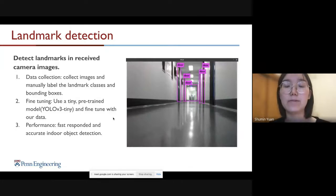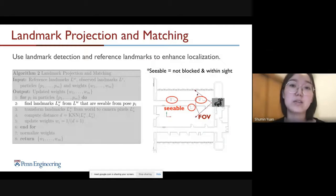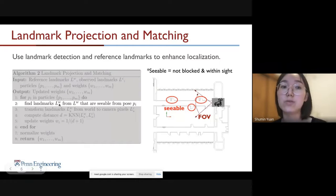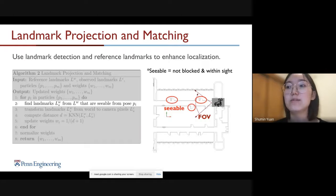I've developed an algorithm to use this detected landmark to enhance the localization. It's called the landmark projection and matching algorithm. The algorithm goes as follows: it loops inside each particle, and for each particle, it tries to find the difference between the observed landmarks, which are the detected landmarks, and the expected landmarks to be seen, which are the seeable landmarks. The first step would be what landmarks are seeable from the floor map. We define that seeable should be not blocked and within sight.